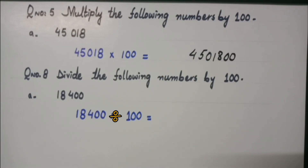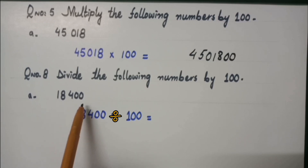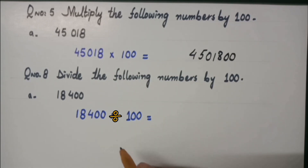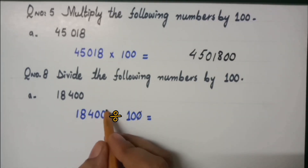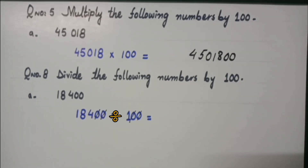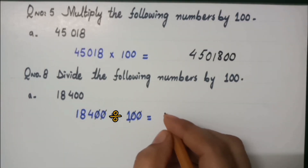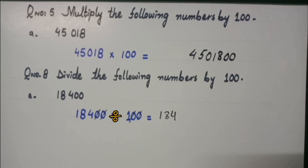Let's apply the division rule again. In question number 8: divide the following numbers by 100. The digit we have is 18,400. The rule was first to remove zeros. So I am going to cancel the zeros — first zero from the right with first zero from the left, then second zero from the right with second zero from the left. The number which remains is 184.